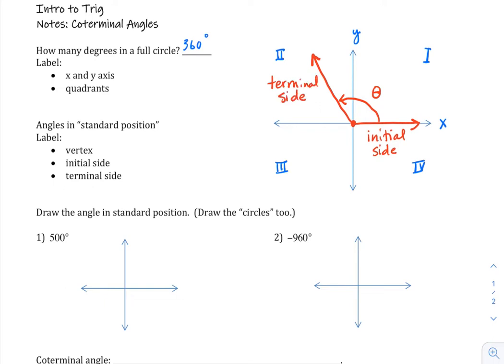Vocabulary-wise, initial usually means the beginning, the start, and terminal, think of the word terminate, the same root word, to stop. So this is where our angle stops.